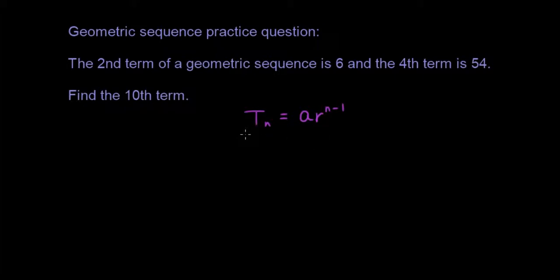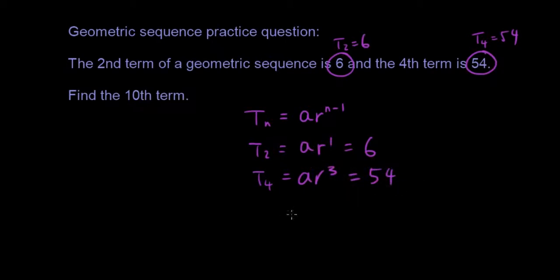So substituting these numbers into our equation, when n is 2, T_2 equals ar^1 which equals 6. And T_4 equals ar^3 which equals 54. So I have two equations: ar^1 is 6, ar^3 is 54.